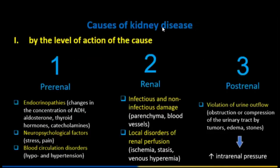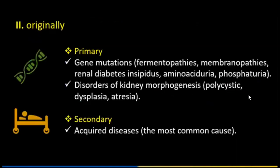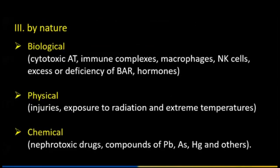Causes of kidney disease by level of action: pre-renal, renal, post-renal. Originally: primary and secondary. Primary includes mutation and disorders of kidney morphogenesis. Secondary includes acquired diseases, which is the most common cause. By nature: biological, physical, and chemical.